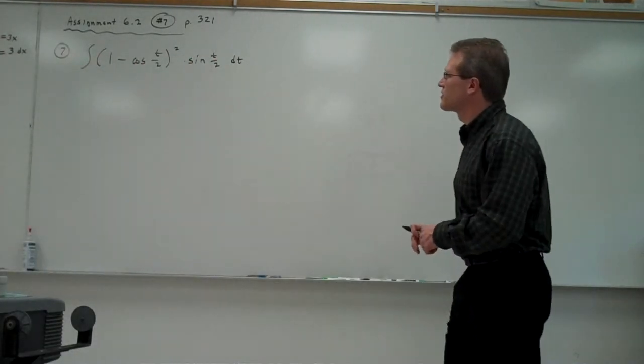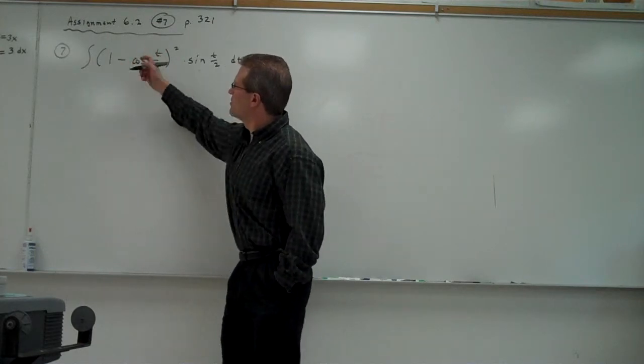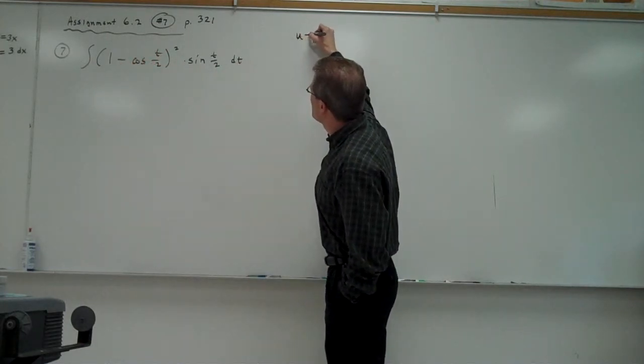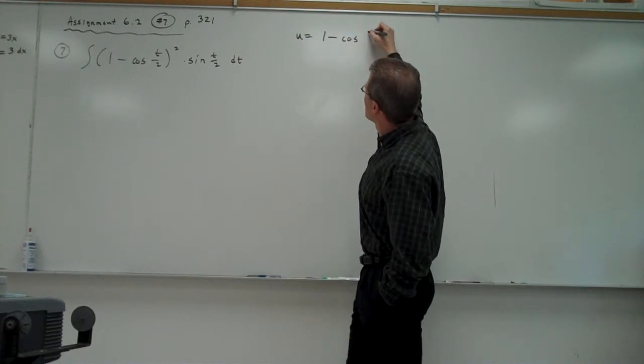I'm going to use u substitution to find the integral. The expression that's in the parentheses is going to be my u. So we're going to start off by writing down u equals 1 minus the cosine of t over 2.